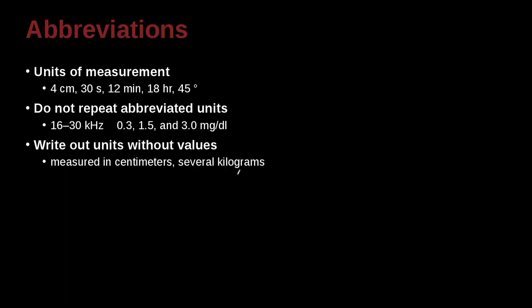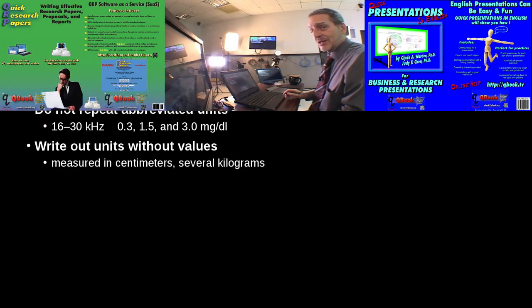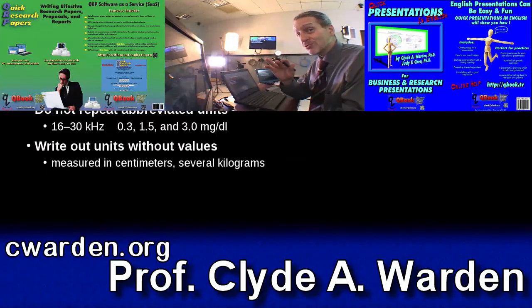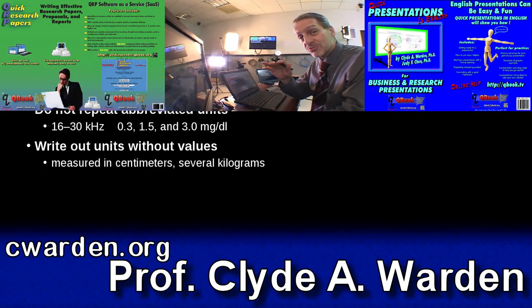Write out units that do not have values. So for example, if you're going to write centimeters, or kilograms, or kilometers, or seconds, or kilohertz, if there's no number, if there's no number, then you must write out the whole word. Now here we have a number for, so we write cm. Here we have no number, so we write centimeters. Getting confused yet with all these rules of what to abbreviate and what not to abbreviate? Well, there's a couple more, so we write centimeters.